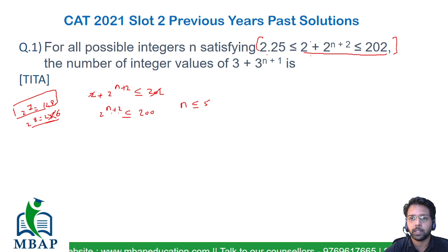Now let's see the other part of this expression which says 2.25 ≤ 2 + 2^(n+2). If I subtract 2 from either side, it's going to become 0.25 ≤ 2^(n+2).